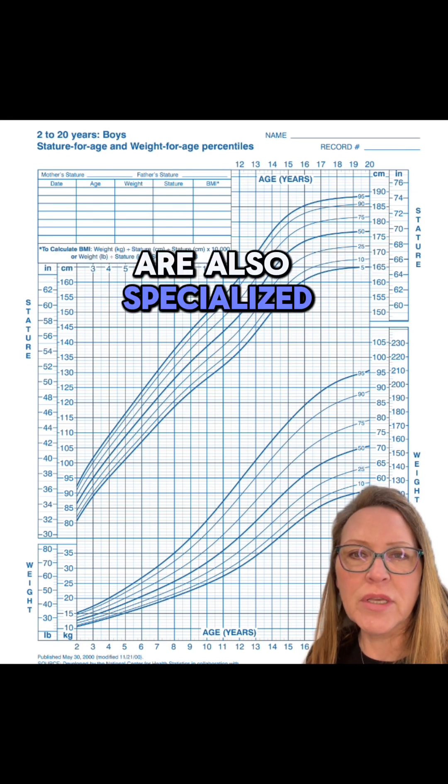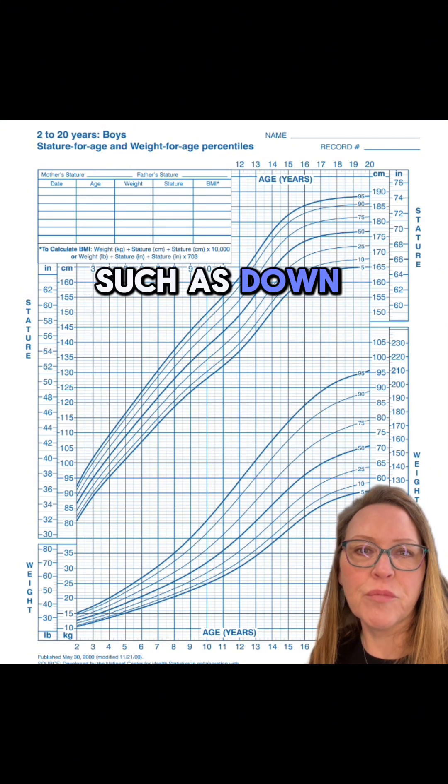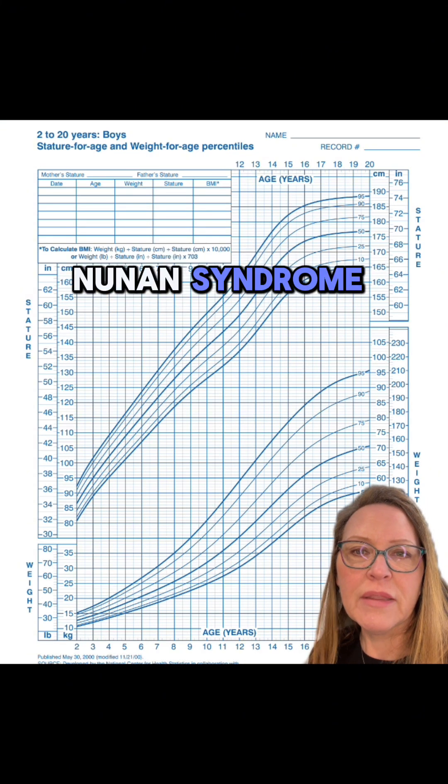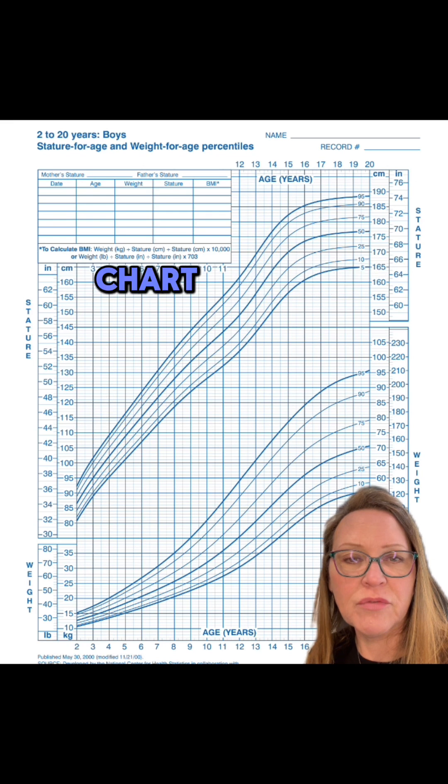There are also specialized growth charts for children with specific conditions such as Down syndrome, prematurity, or Noonan syndrome. The key is selecting the right chart for the individual child.